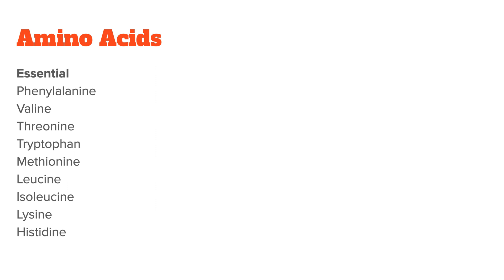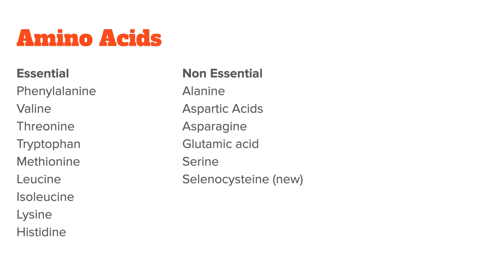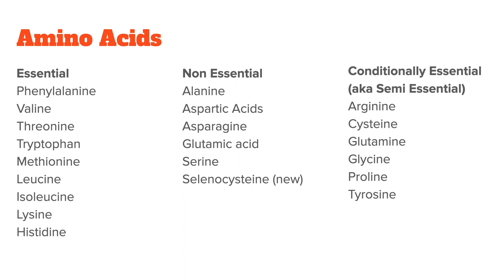What you need to know is that there are three groups of amino acids. First, you have the essential amino acids — those are the amino acids that your body cannot make itself, so it needs to get them through your diet. Next, you have the non-essential amino acids, which can be synthesized by the body from other amino acids. And third, you have the conditionally essential amino acids, which become essential in times of stress or, for example, when you're sick.